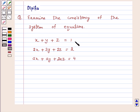x plus y plus z is equal to 1. 2x plus 3y plus 2z is equal to 2. ax plus ay plus 2az is equal to 4.